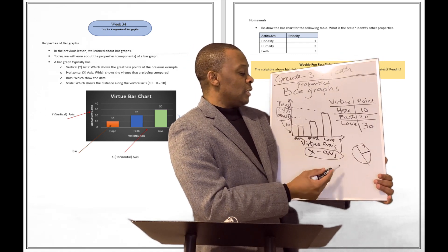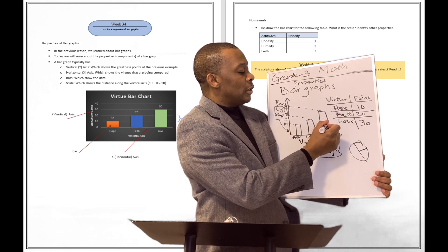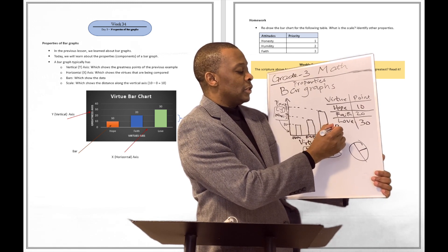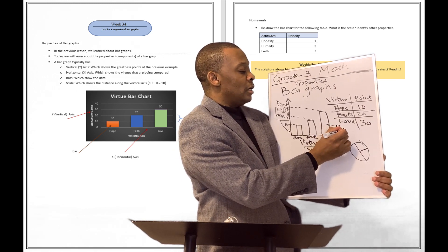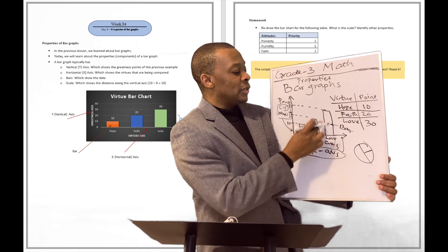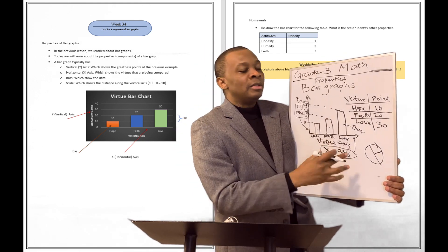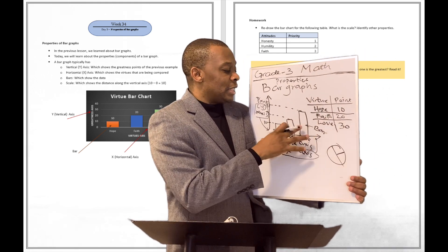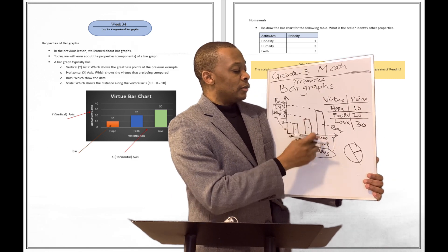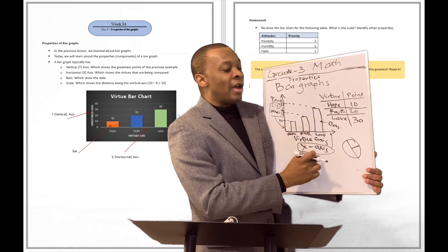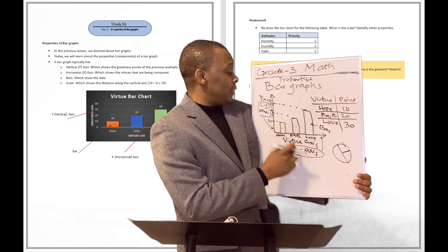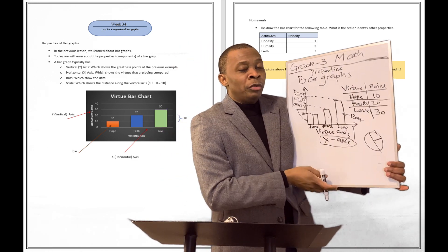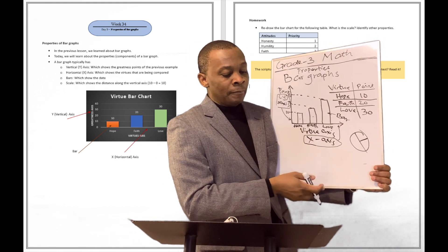There's going to be another property that we can call the bars themselves. So this is going to be a bar — that's a bar. This is a property of the bar chart as well. So we've got a bar. We have x-axis. We have y-axis. Three properties so far.